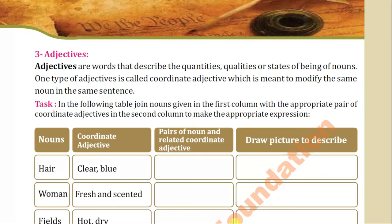We have already talked about the nouns. Now the words that qualify the nouns are called adjectives. The definition is already given over here: adjectives are words that describe the quantities, qualities, or state of being of nouns. One type of adjective is called a coordinate adjective, which is meant to modify the same noun in the same sentence.